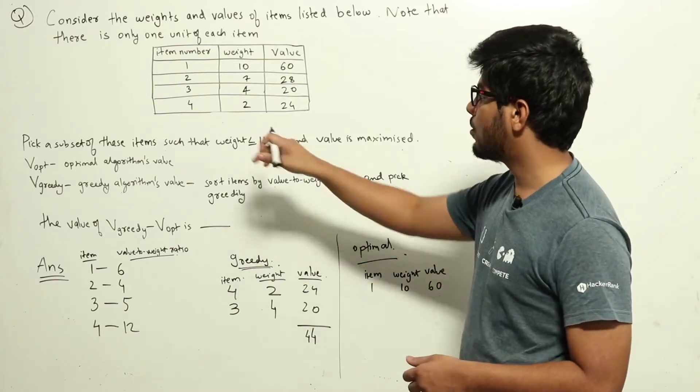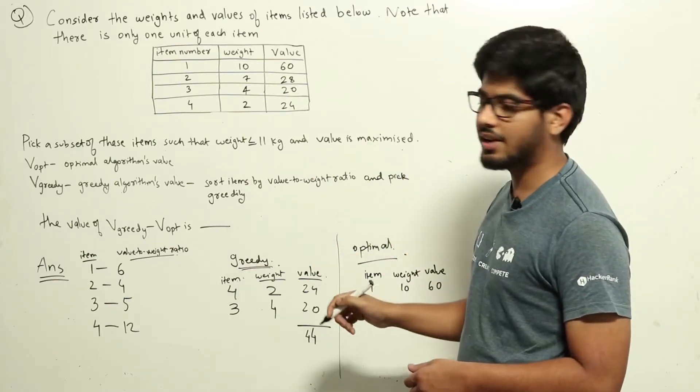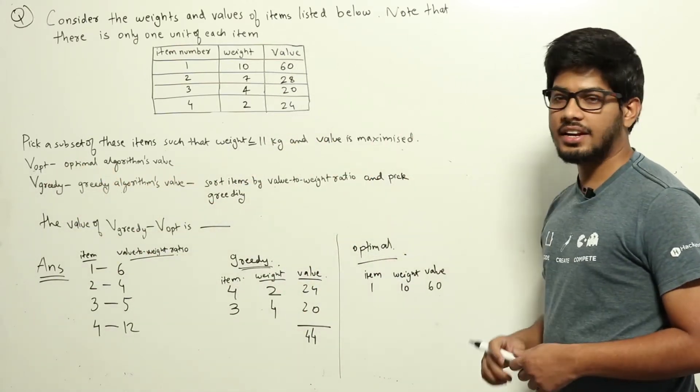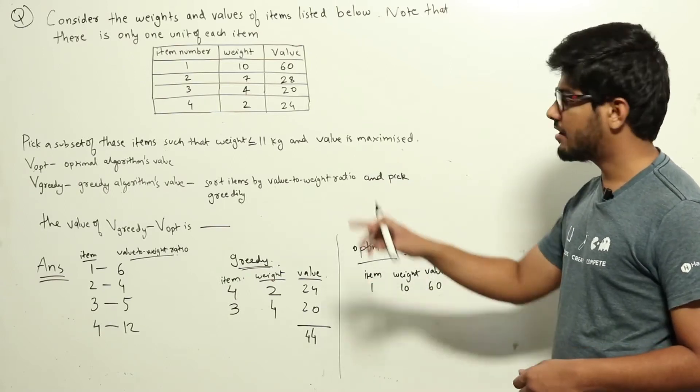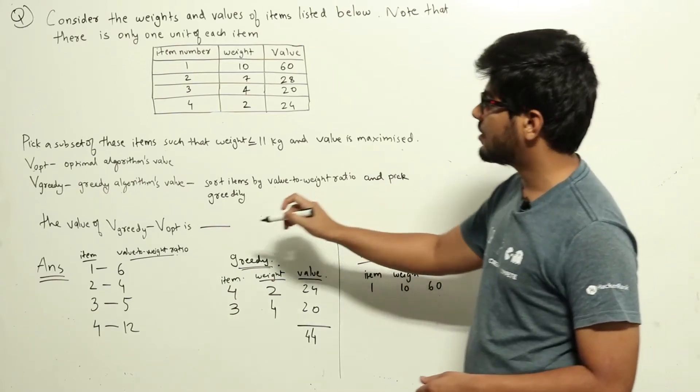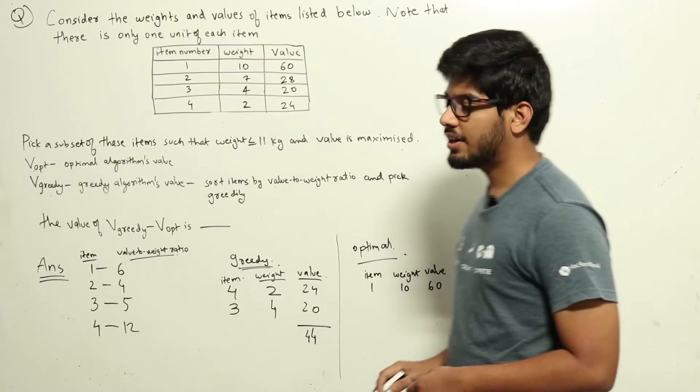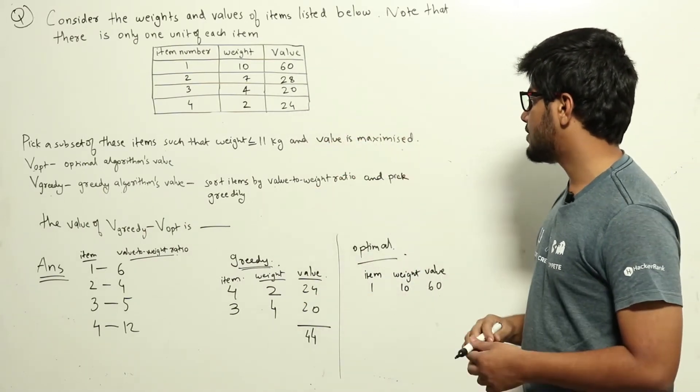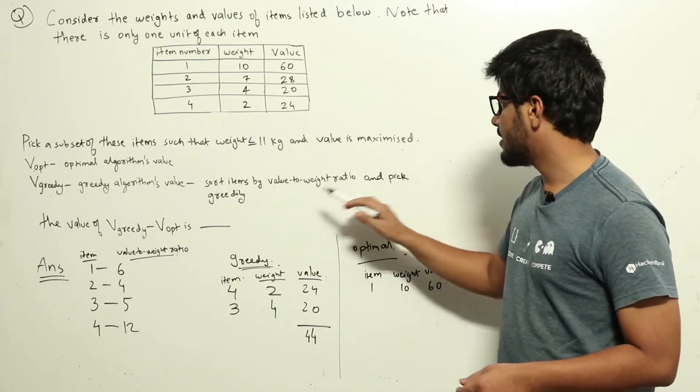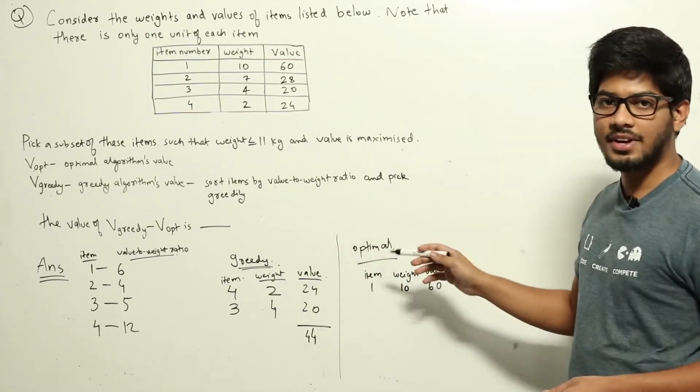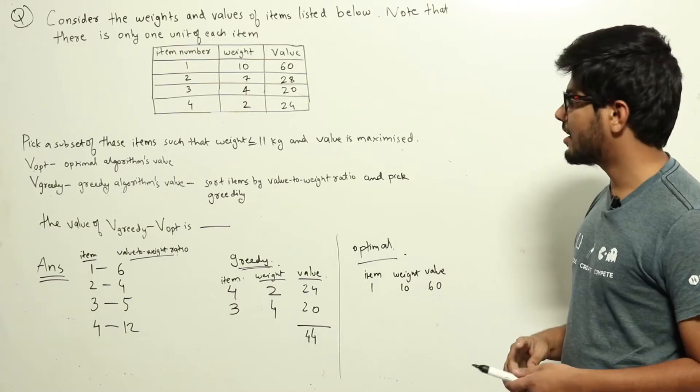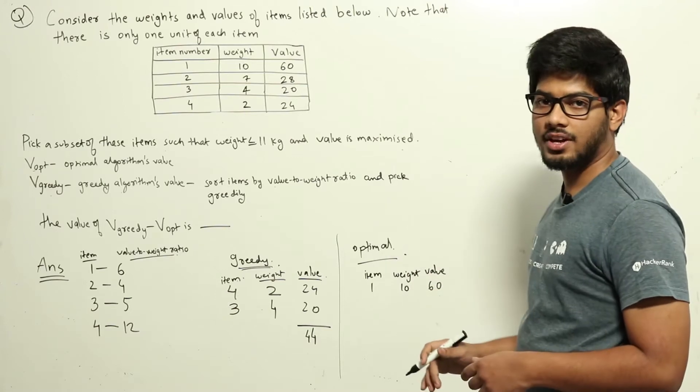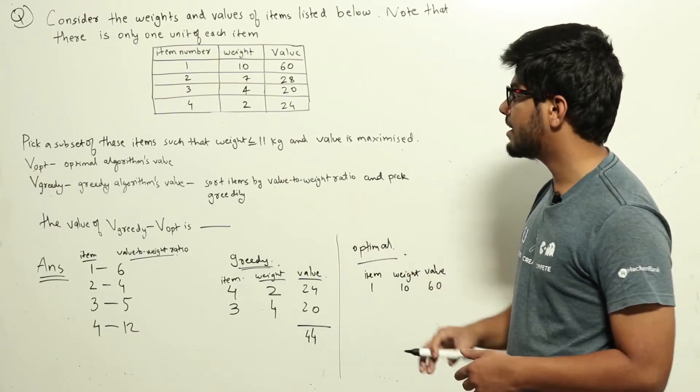Now there are two ways of doing this. One will have the optimal algorithm which will give the maximum value, denoted by V_opt. There can also be a greedy algorithm which was given in the question. It will give us a value named V_greedy. The greedy algorithm will sort the items based on their value-to-weight ratio and then start picking them greedily—that is, pick the item having the highest value-to-weight ratio, then pick the second item with the next highest ratio, and keep going. That will give us the V_greedy value.